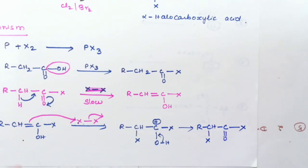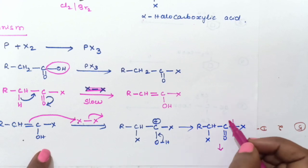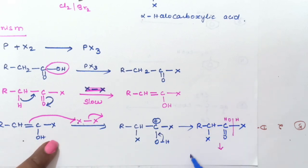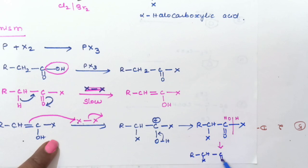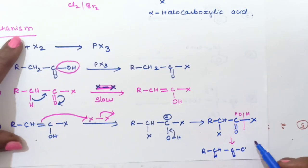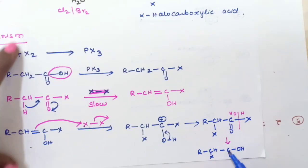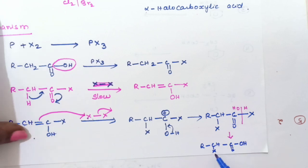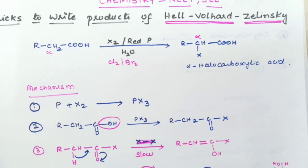In the final step, hydrolysis takes place. The C=O–X bond is hydrolyzed: OH is added and H is added, giving the final product RCHX–COOH — the alpha-halocarboxylic acid, where the halogen is substituted at the alpha position. This completes the mechanism.